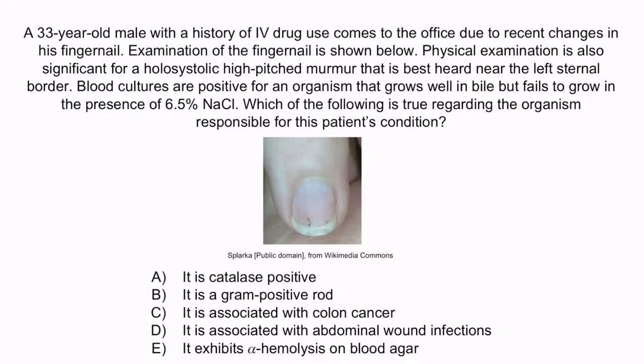Now let's review with a question. A 33-year-old male with a history of IV drug use comes to the office due to recent changes in his fingernail. Physical examination is also significant for a holosystolic high-pitched murmur that is best heard near the left sternal border. Blood cultures are positive for an organism that grows well in bile, but fails to grow in the presence of 6.5% sodium chloride. Which of the following is true regarding the organism responsible for this patient's condition? A: it is catalase positive. B: it is a gram-positive rod. C: it is associated with colon cancer. D: it is associated with abdominal wound infections. E: it exhibits alpha-hemolysis on blood agar.